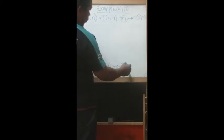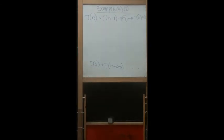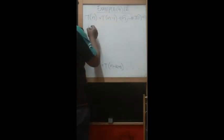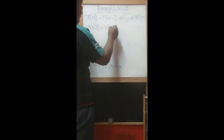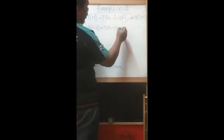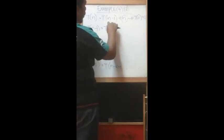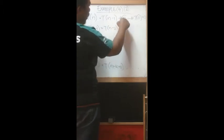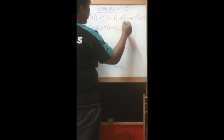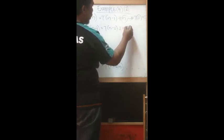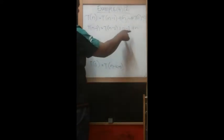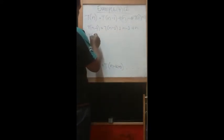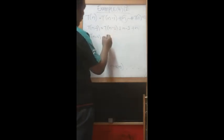Now we need to derive the pattern. T(n-1) becomes T(n-2), so we have T(n-2) plus n minus 1, where n is substituted with n minus 1. This gives us T(n-2) + (n-1) + n. This is the first pattern, so please observe carefully. After that, T(n-2) substituted becomes T(n-3), so this becomes T(n-3) + (n-2) + (n-1) + n.